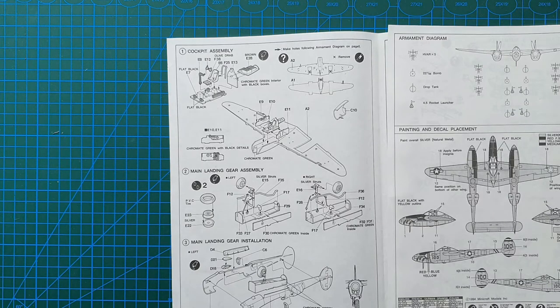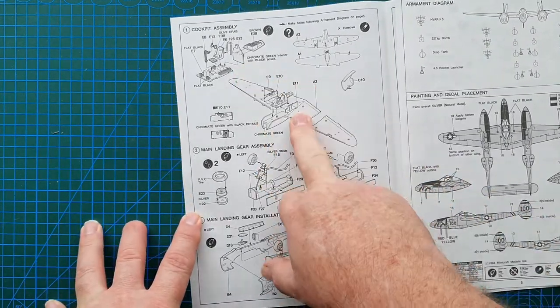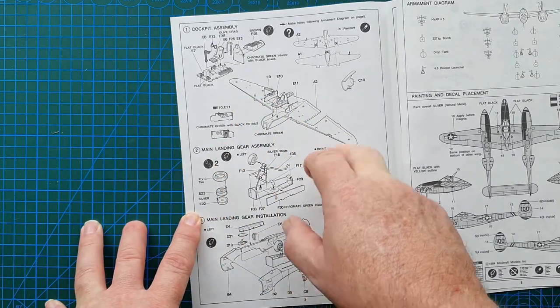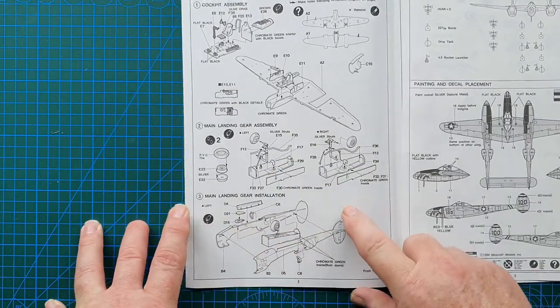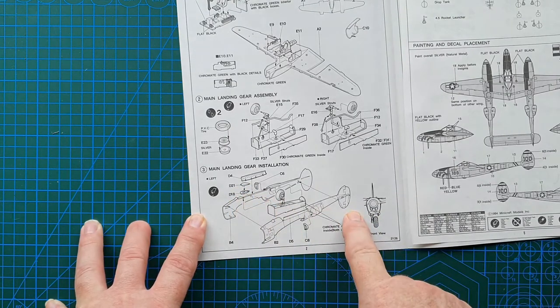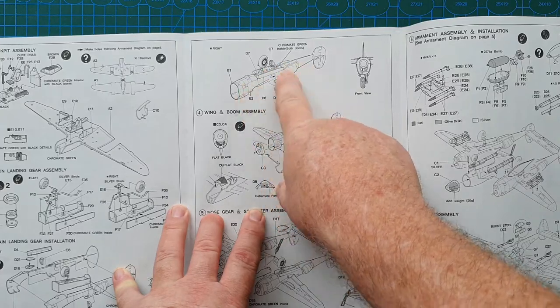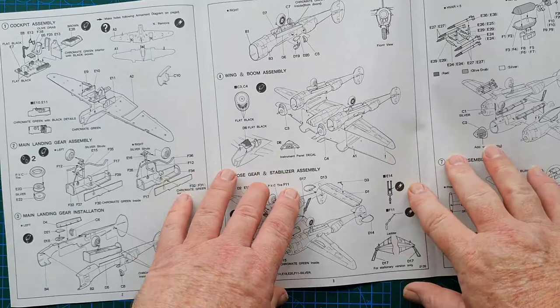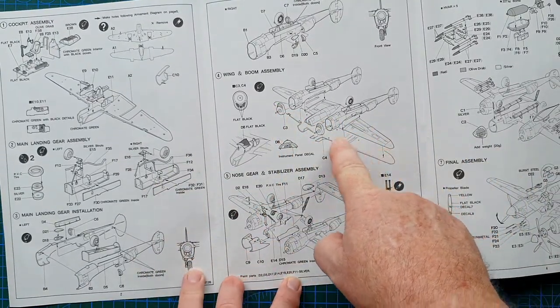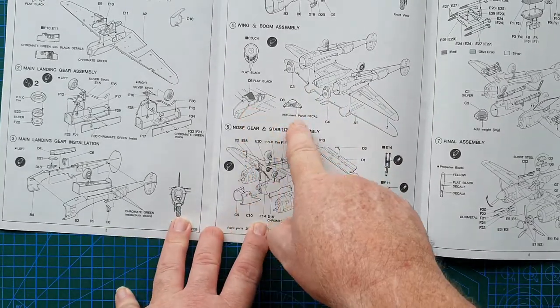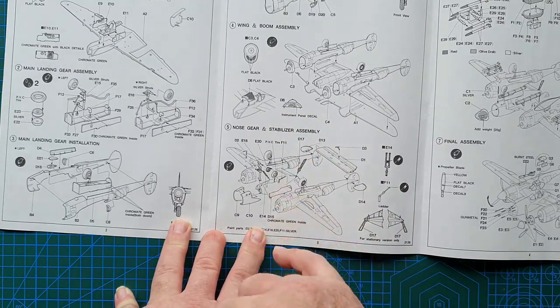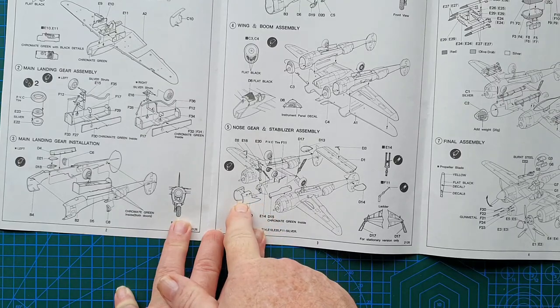This kit doesn't specify any paint manufacturer, it just says paint it this color. So you just match it up with whatever paint manufacturer you use. Cockpit goes on the bottom wing, then we get to the wheel wells, then we get to the booms. There's two of these, they're basically exactly the same. It all just goes together on the top wing. Front of the engines go on, front of the cockpit, instrument panel decal. Then you've got the rest of it, nose wheel, front of the aircraft, tail.